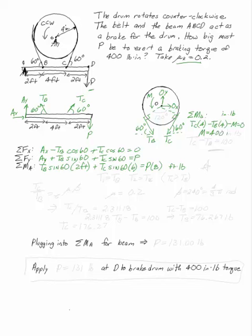My M is this 400 inch-pounds that I'm looking to get. So if I simplify it a little bit just for ease, I can say TC minus TB is 100.